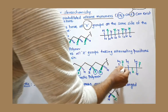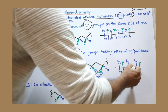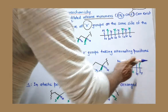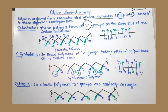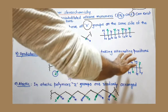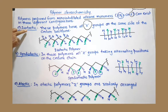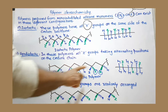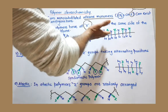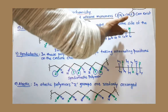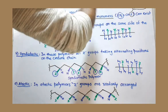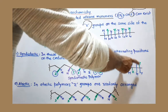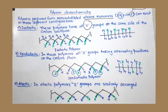At each substituted carbon, when Z is above the plane H is down, and when Z is below the plane H is up — Z and H alternate positions regularly. In both isotactic and syndiotactic stereoisomers you can observe a regular arrangement: either Z always above the plane, or Z alternating above and below. Regularity is the key feature of both these types.